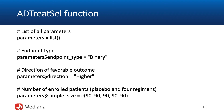The first step in the code is to load the Mediana Designer package and initialize the list of function parameters. The first argument is the endpoint type, which is set to the keyword 'binary' since the primary efficacy endpoint is binary. The primary endpoint is defined in terms of response rate, so the direction of favorable outcome parameter is set to the keyword 'higher', indicating that higher response rates are favorable.